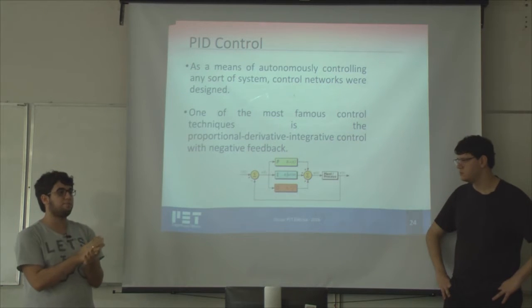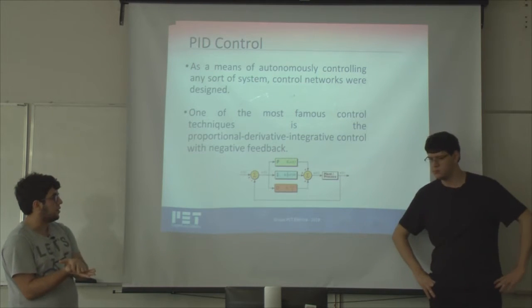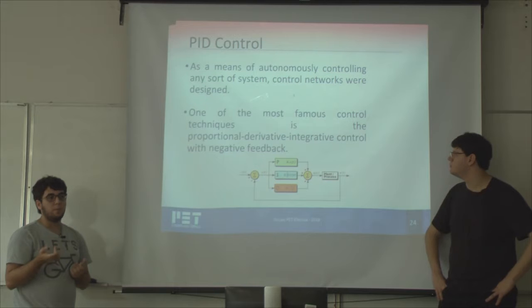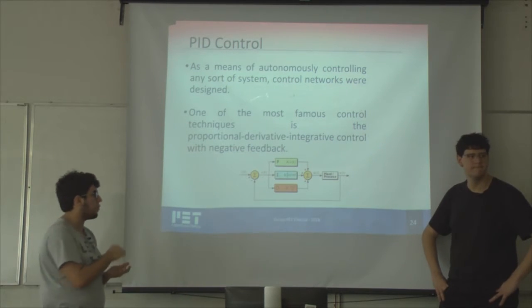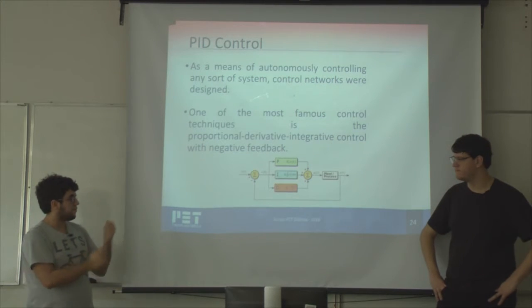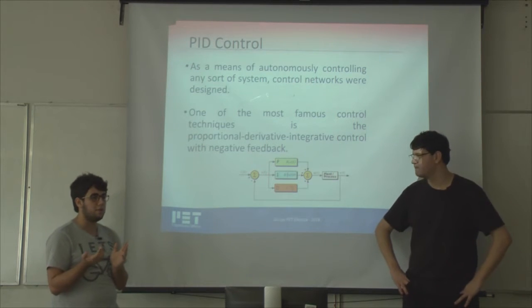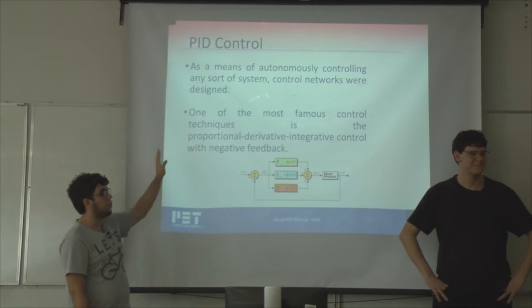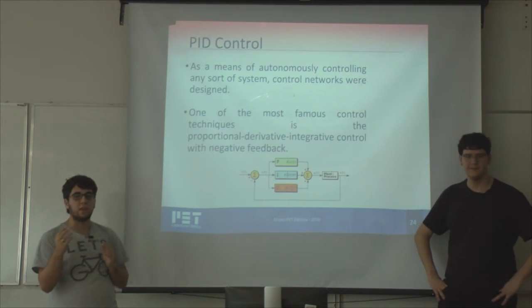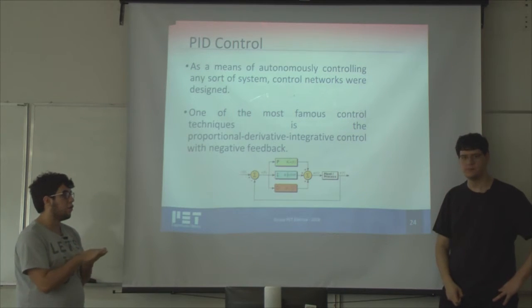The integrative part is kind of similar. It also lowers the rising time of the answer, but it gets higher overshoot. But another thing is it makes the error in your permanent regime zero. Error in permanent regime is when you have a reference and you have your exit in the control system. When your exit will be equal to your reference value. But if you only use the proportional part, it will have a small mistake between these two signals. The integrative part will zero this mistake, so you always have on your output the same value that you have in your reference.